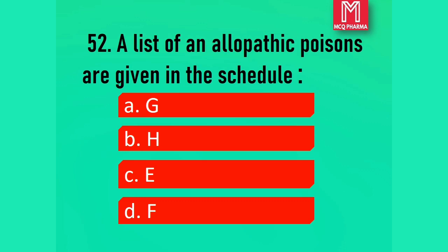Question number 52. A list of allopathic poisons are given in the schedule: Option A, G. Option B, H. Option C, E. Option D, F. Correct answer: Option C, Schedule E. Schedule E contains various poisons and their regulations.